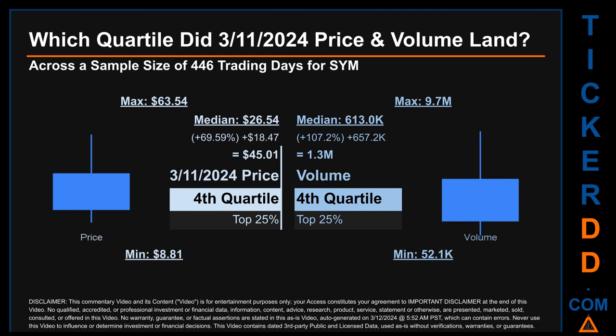Hello, my name is Maria. Which quartile did March 11, 2024, price and volume land in across a sample size of 446 trading days? The maximum end-of-day price for SYM was $63.54, while the minimum was $8.81. The March 11, 2024, price of $45.01 landed within the fourth quartile, meaning it was within the top 25% of all sampled end-of-day prices. The day's volume also landed within the fourth quartile — top 25% — which saw a max daily volume of 9.7 million and a minimum of 52.1 thousand.